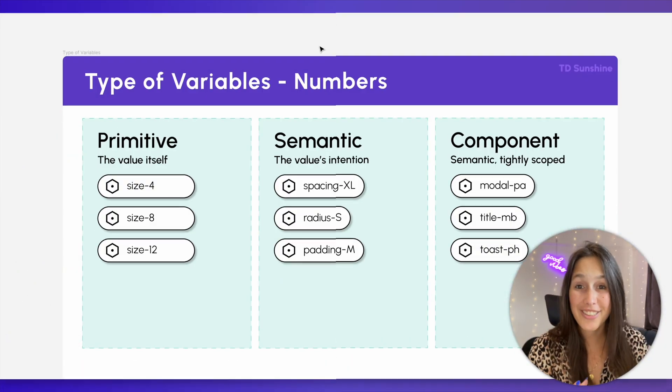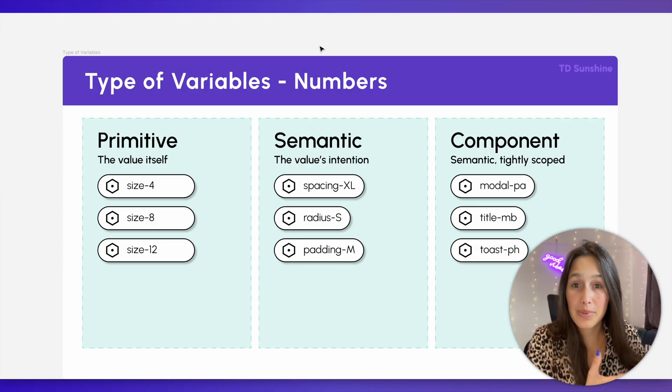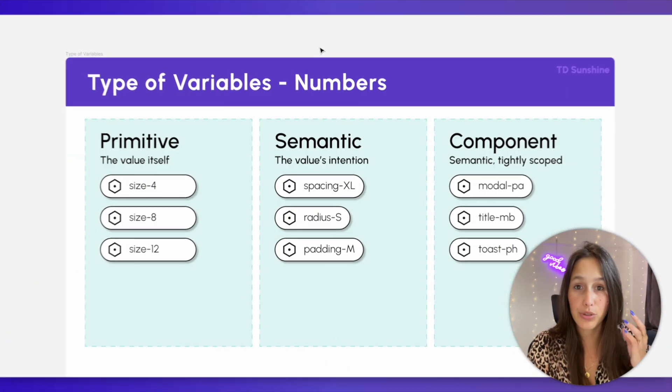And we can do this using numbers as well — it's not just for colors. So that is the variable best practice handed down to us from Figma. Let's have a look at how we use this in practice and maybe add some modes to make it even more interesting.